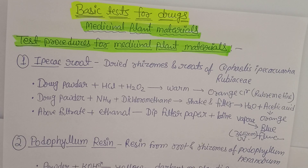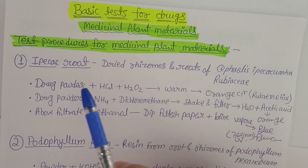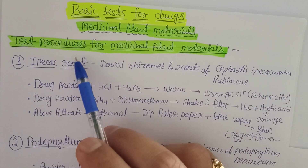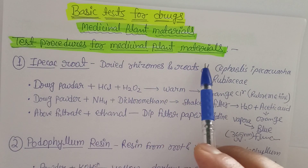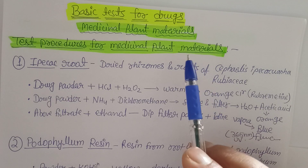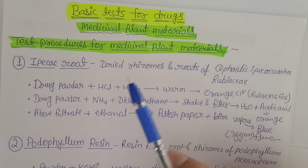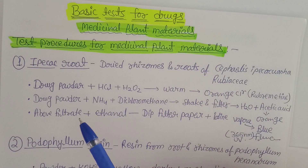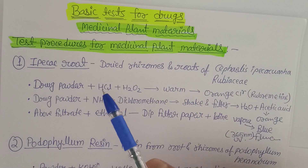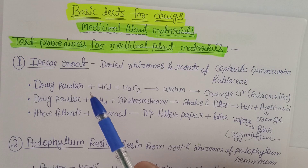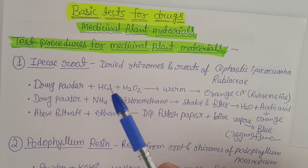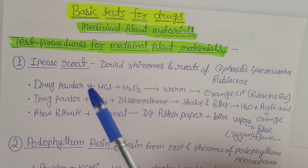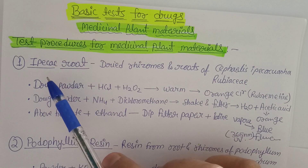This is Quality Control and Standardization of Herbal Drugs (QCSH), Unit 1, second topic: basic tests for medicinal plant materials. We are going to discuss the test procedure for medicinal plant materials. A few medicinal plant examples are given so that we understand what preliminary testing has to be done to identify particular crude drugs.